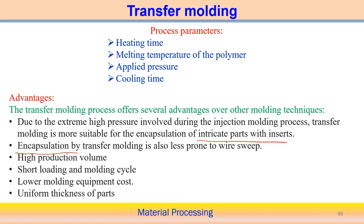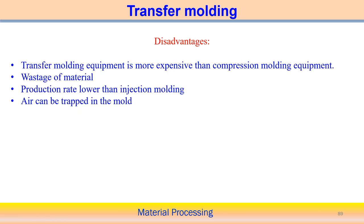There are certain problems associated with transfer molding. Transfer molding equipment is more expensive than compression molding equipment. There is material wastage because material remains in the sprue. Production volume is lower compared to injection molding. Additionally, air can become trapped inside the mold during the transfer process, which can be a problem.